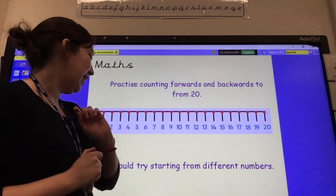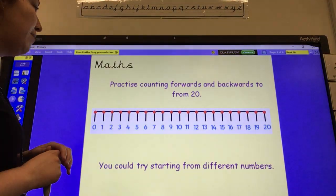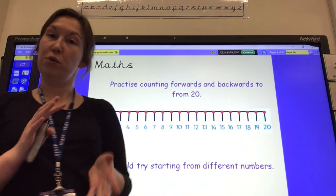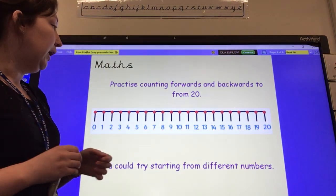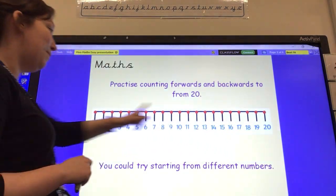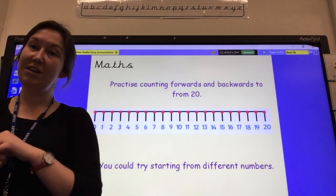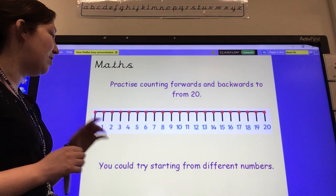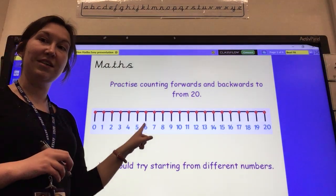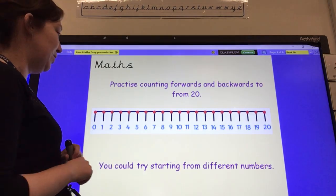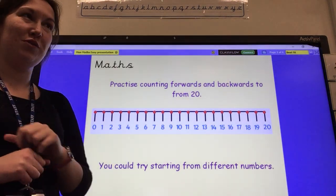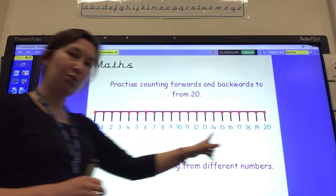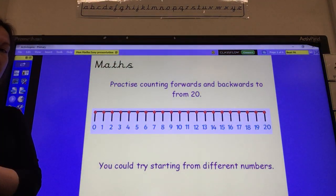Now I've got a challenge at the bottom. Can you try starting on different numbers? Maybe you could start on the number 12 and count forwards to 20. Now can you start at 16 and count backwards to 0. This time can you start on the number 6 and count forwards to 20. And finally start on 19 and count all the way back to 0.